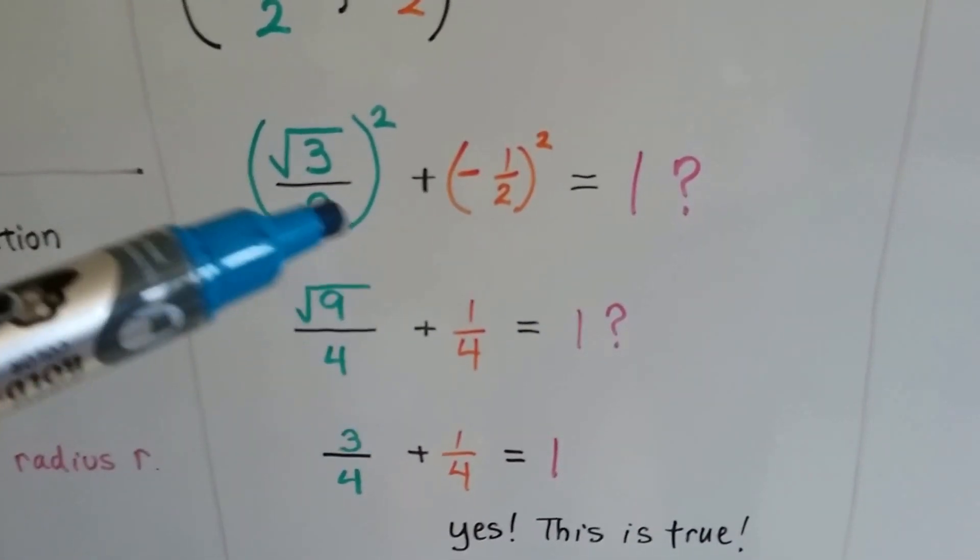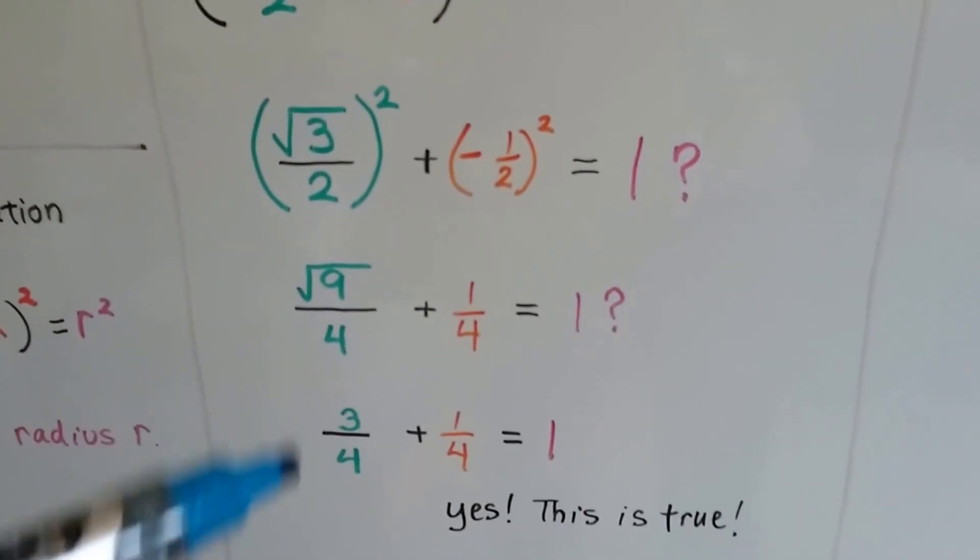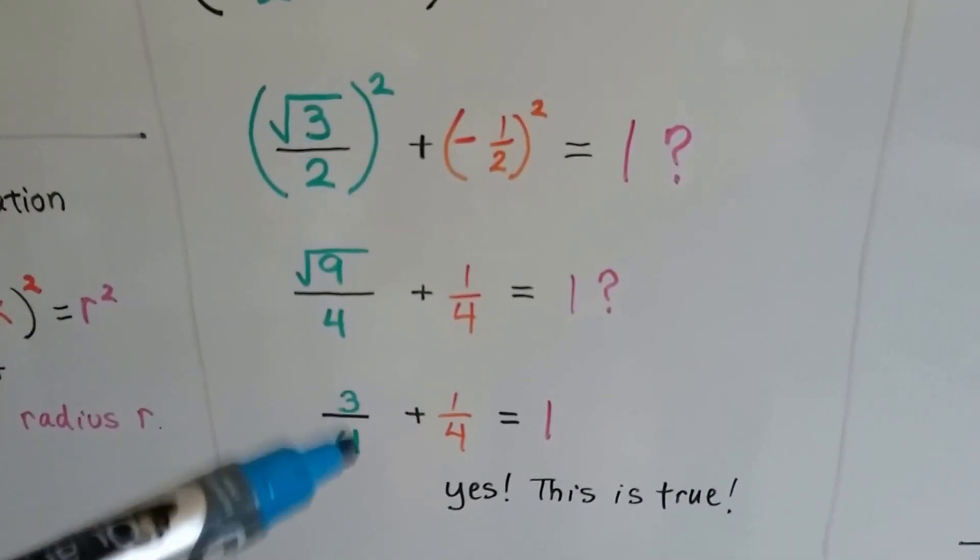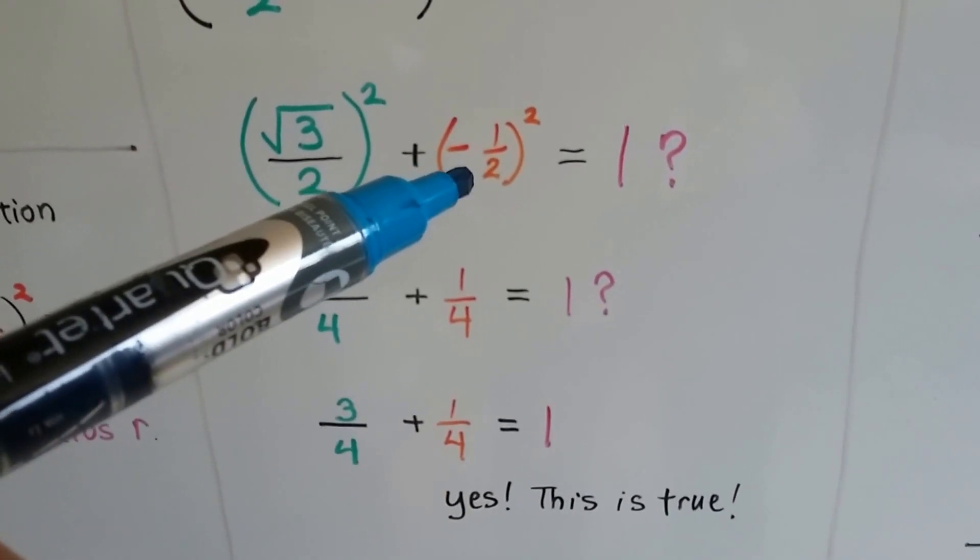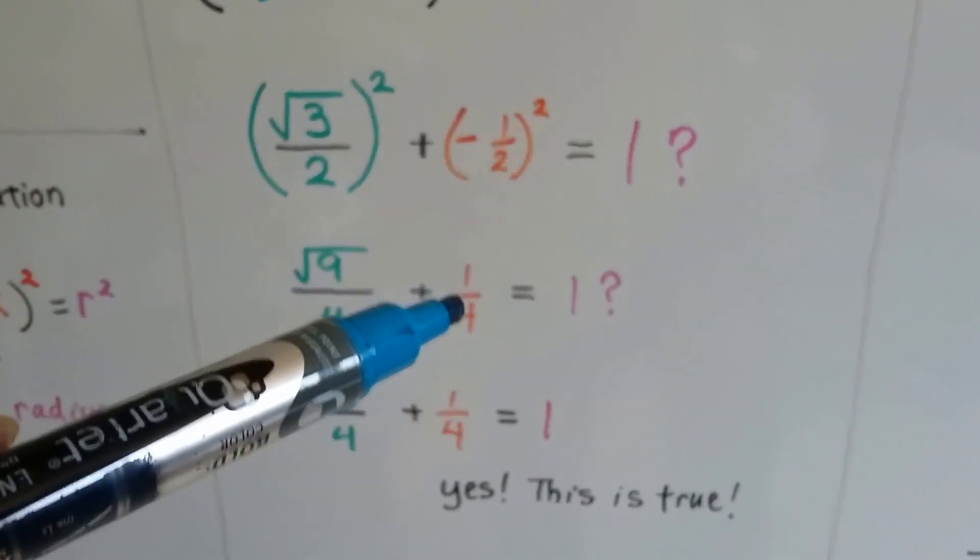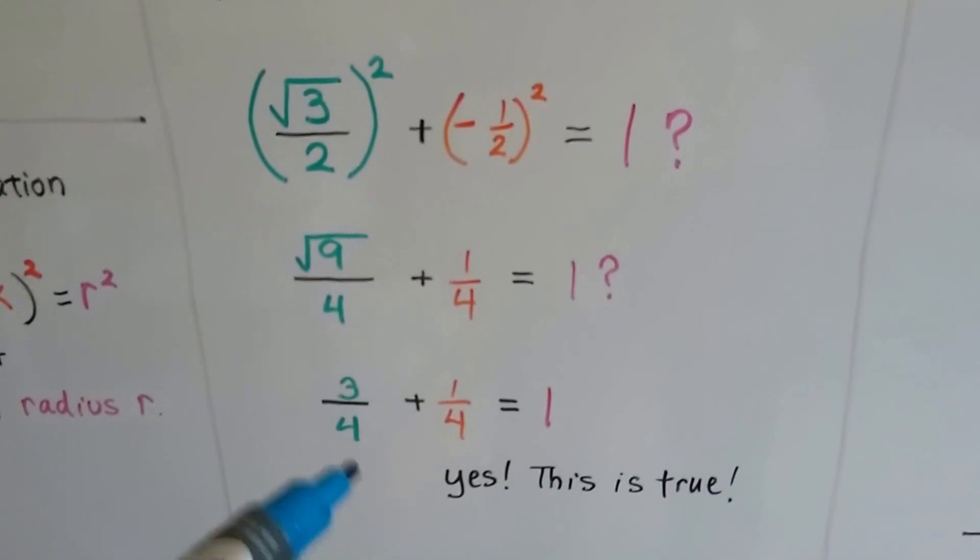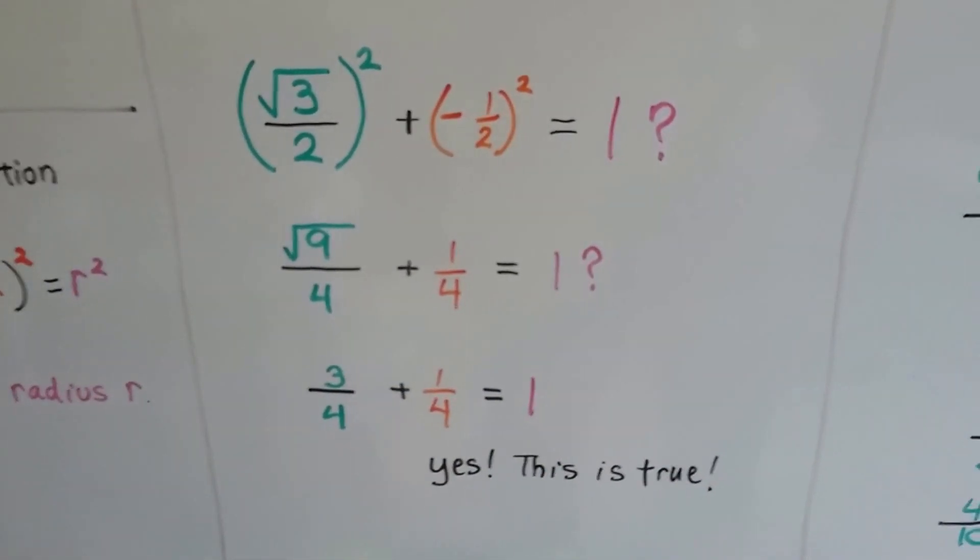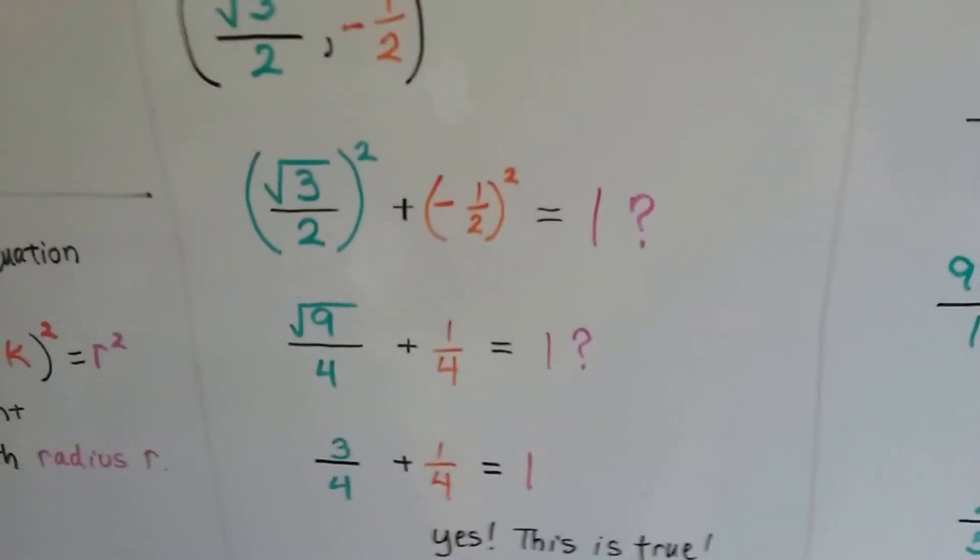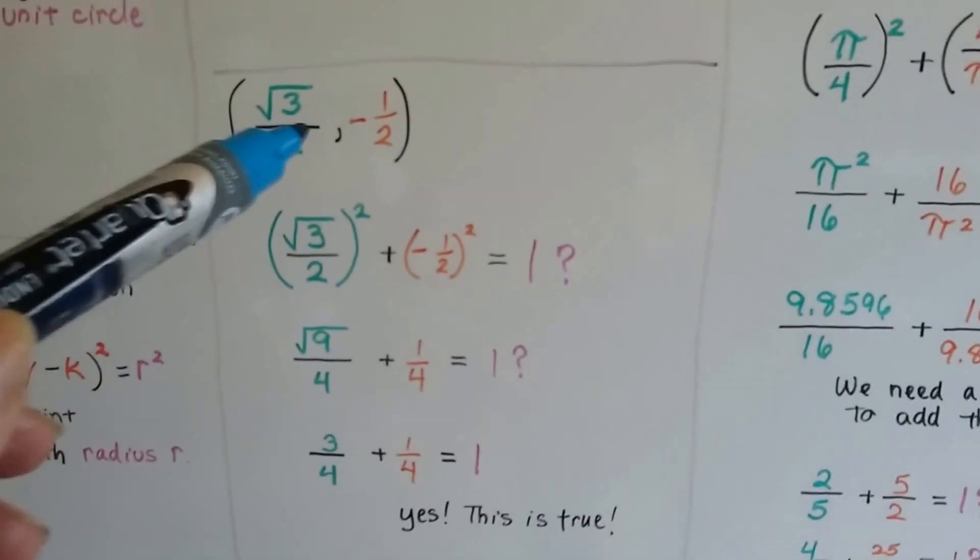And that gives us a 3 for our numerator. And then we have 2 times 2, that's a 4. So that gives us 3 fourths on this side for x. Negative 1 half times negative 1 half is a positive 1 fourth. So does 3 fourths plus 1 fourth equal a 1? Yeah, it does. So it's true. It does lie on the unit circle, these points.